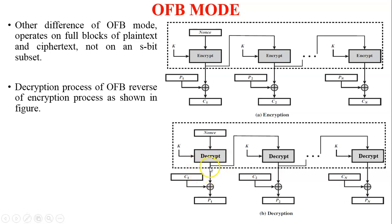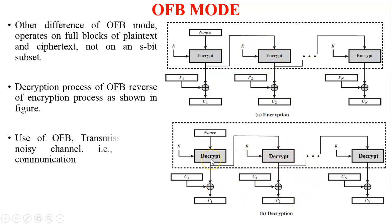The decryption process output O1 is fed back to the second process, where it is decrypted with the key and generates O2. Then O2 XOR C2 generates plaintext P2. So the above figure is the encryption of OFB mode and the below figure is the decryption process of OFB mode.